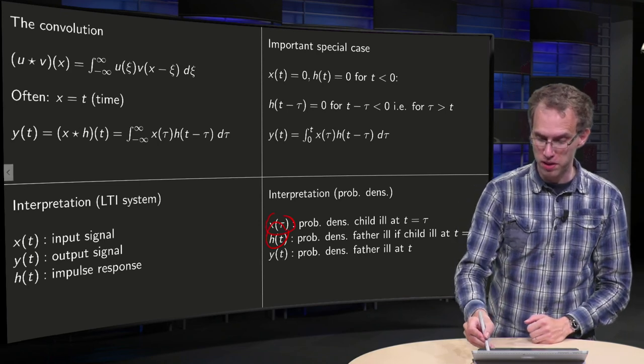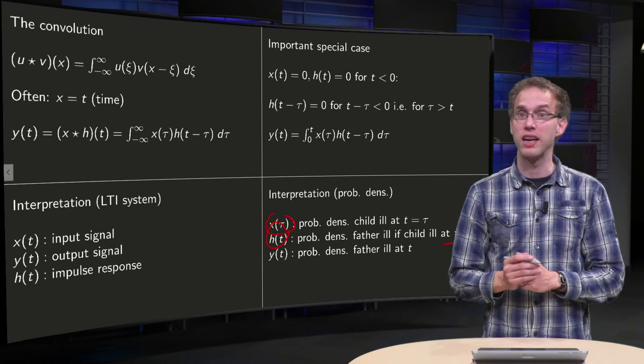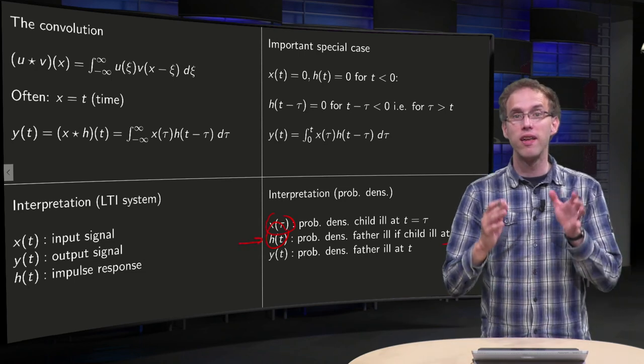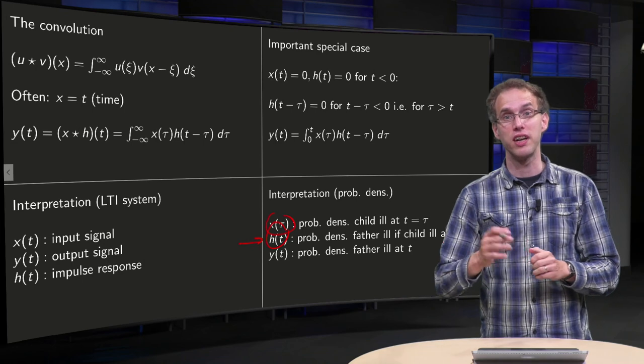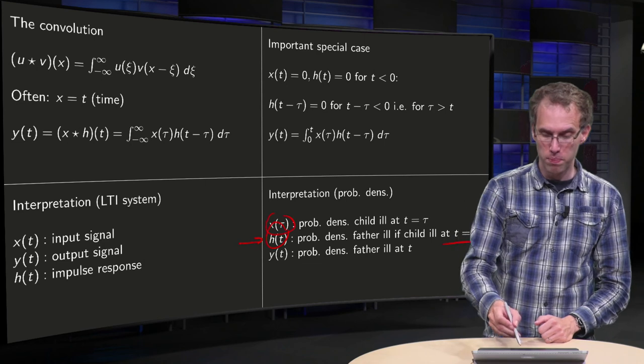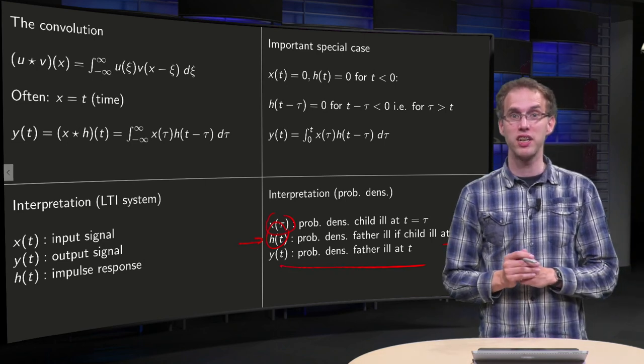so the h of t is the probability density that the father gets ill after the child gets ill, so suppose the child is ill at t equals zero, then h of t is the function, the chance that the father gets ill after that. Now what's the probability density that the father gets ill?